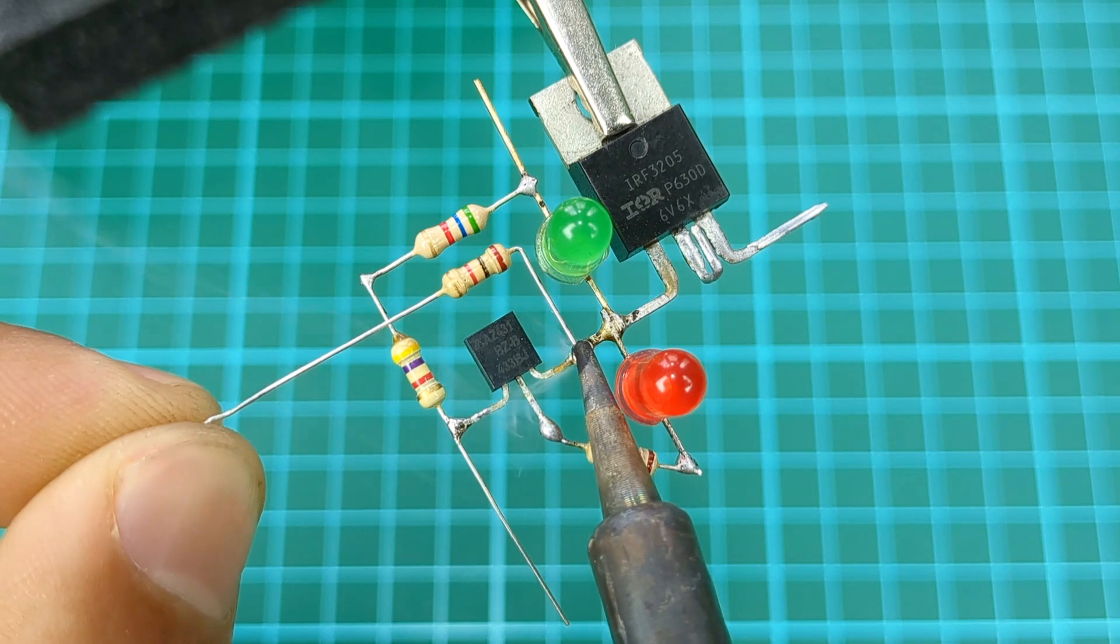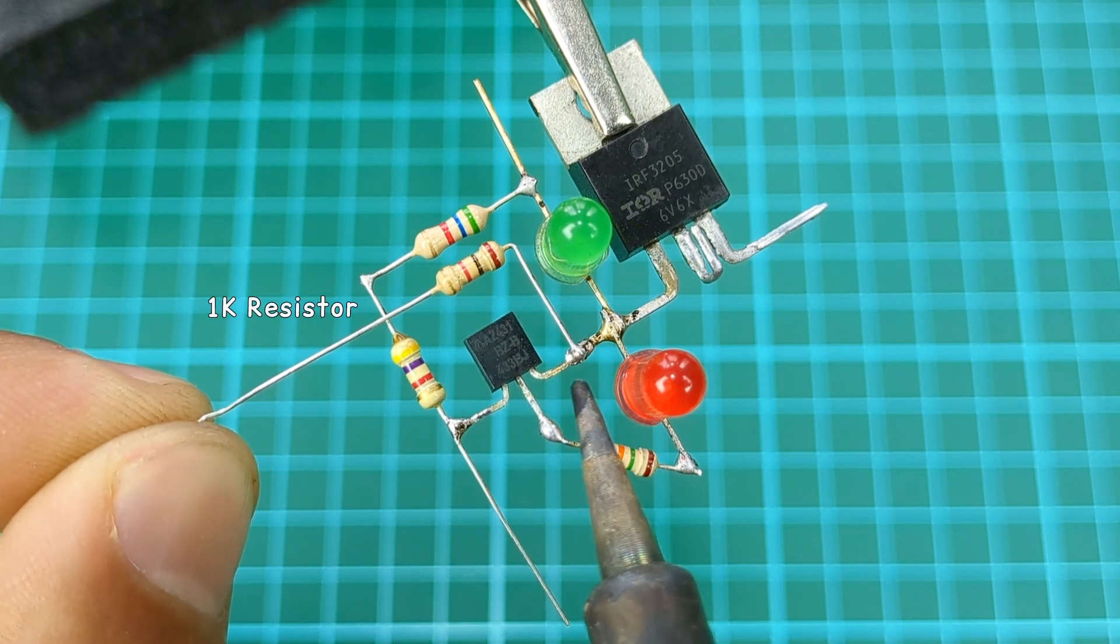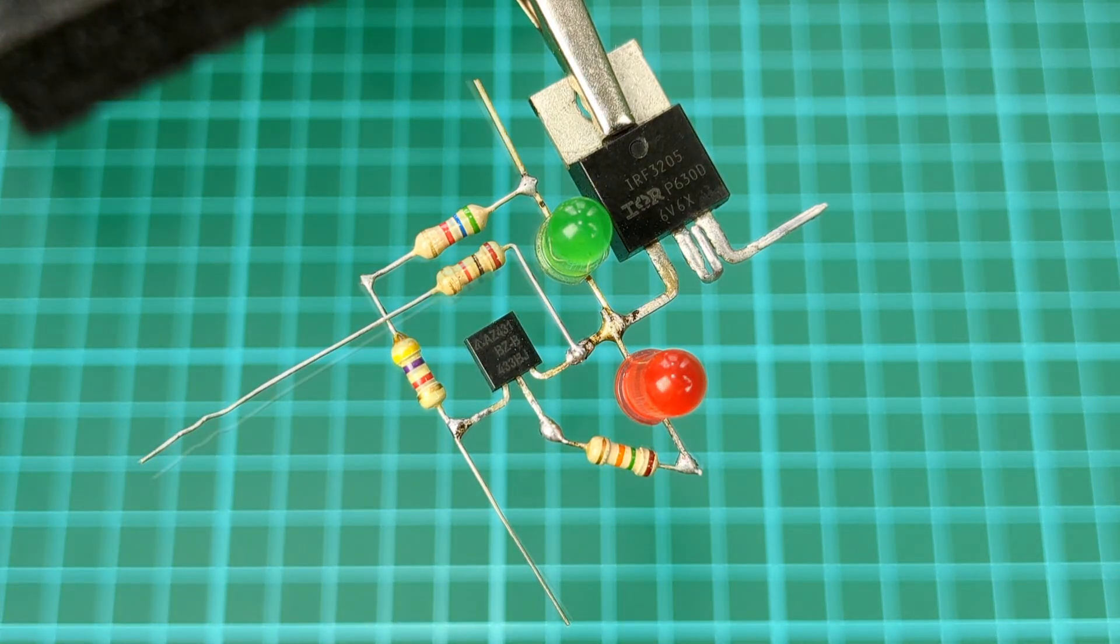Now take a 1 kilo ohm resistor and connect it from third pin of the shunt regulator to both resistors common points.